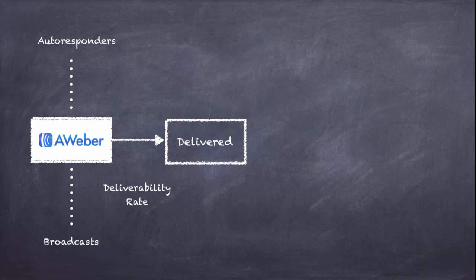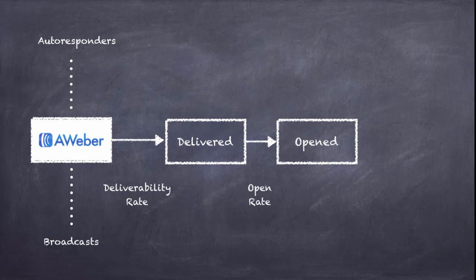Deliverability rate means what percentage of subscribers actually receive your email. From those who do receive it, you also need to look at how many people actually open it — this is called the open rate. Not every subscriber you send an email to is going to open it. Even in your own inbox there are probably emails from months or years ago you've never opened. There are many factors involved, but understanding open rate is key.